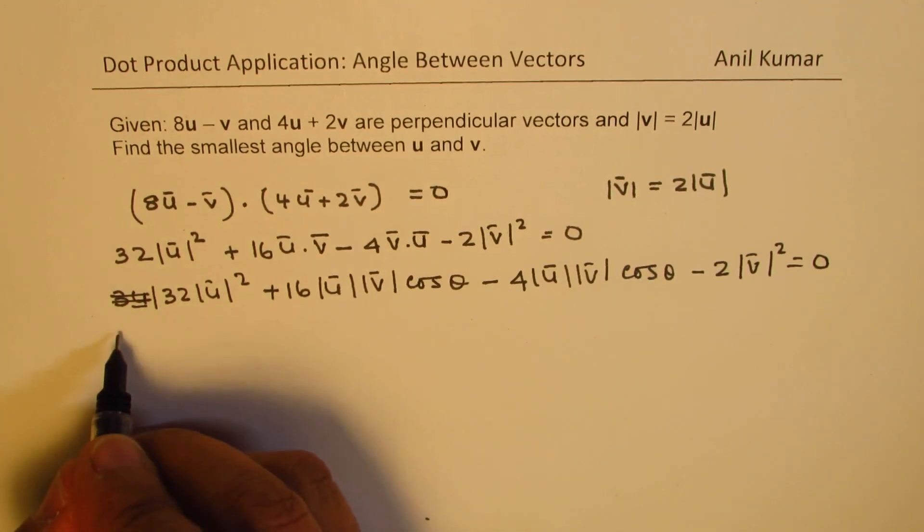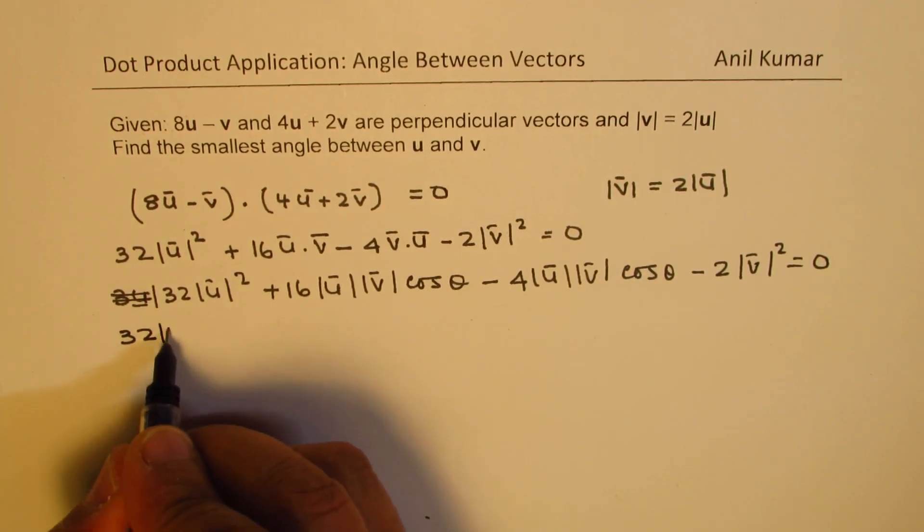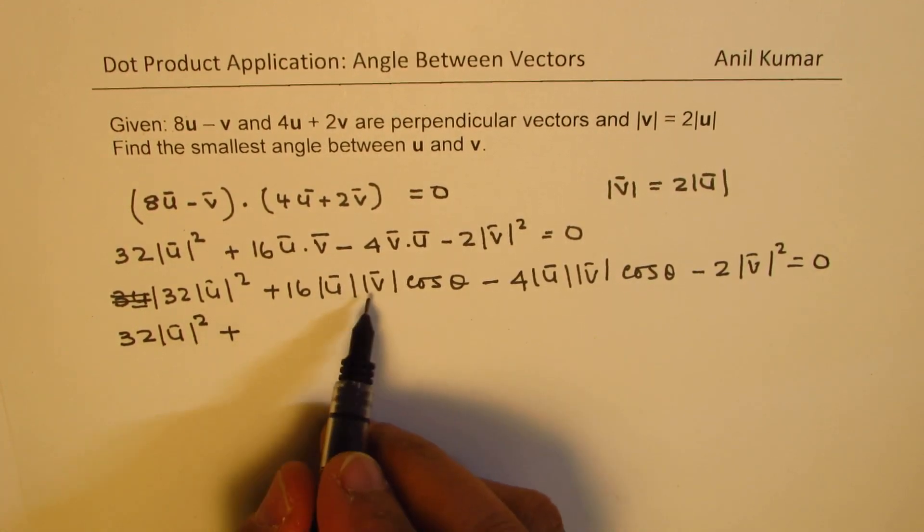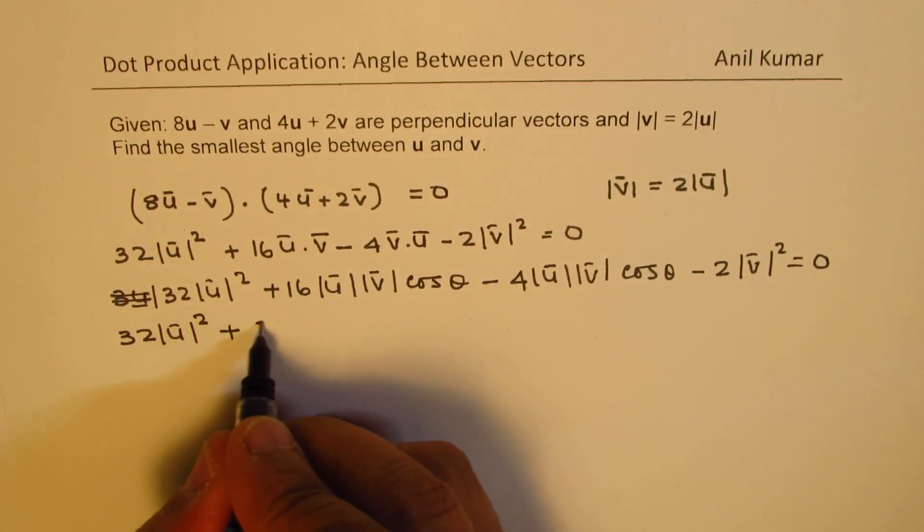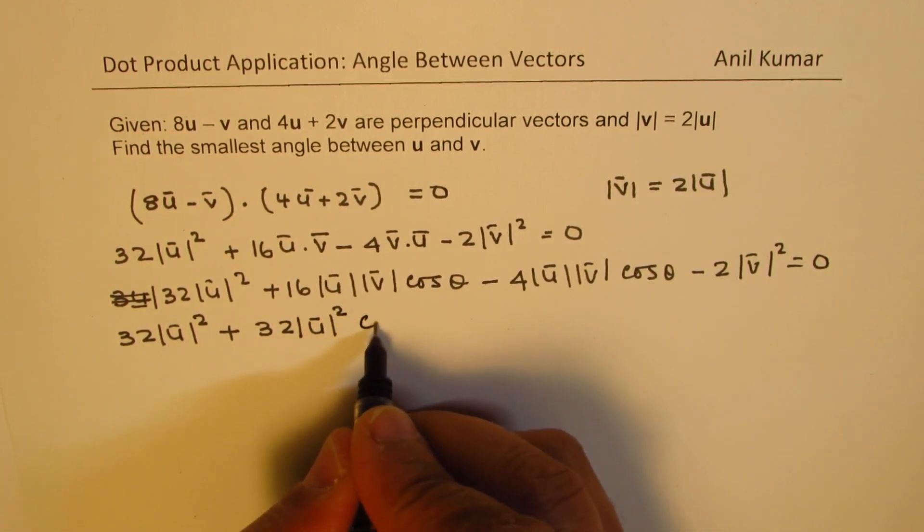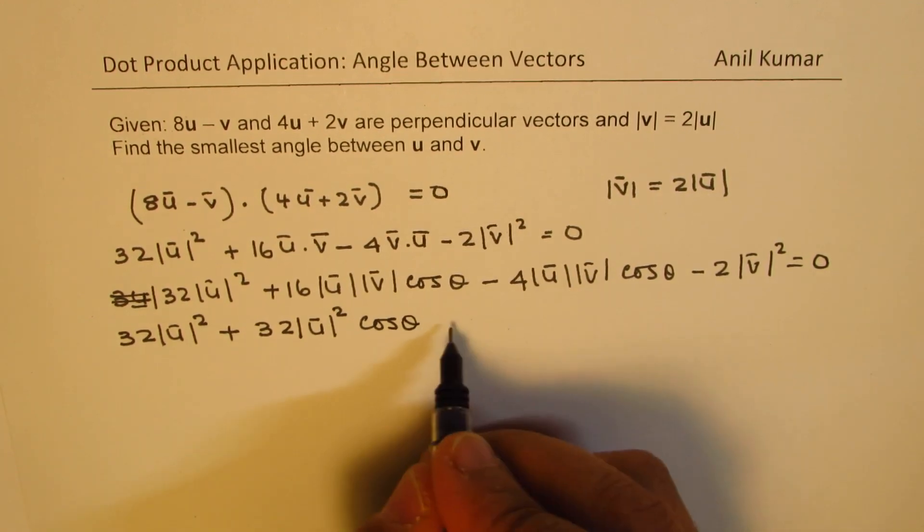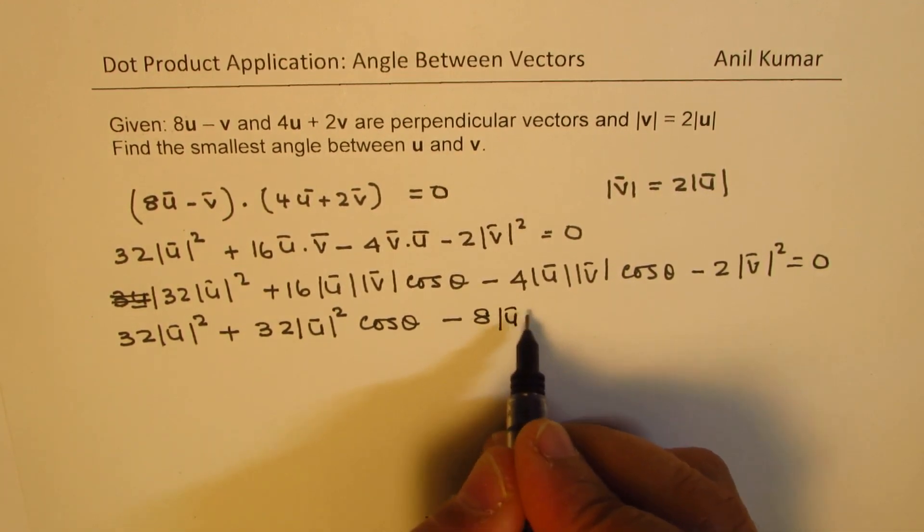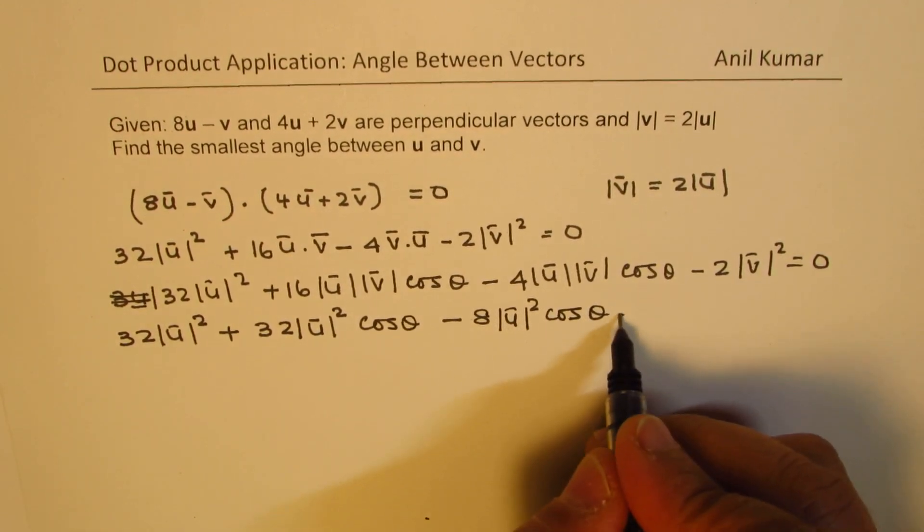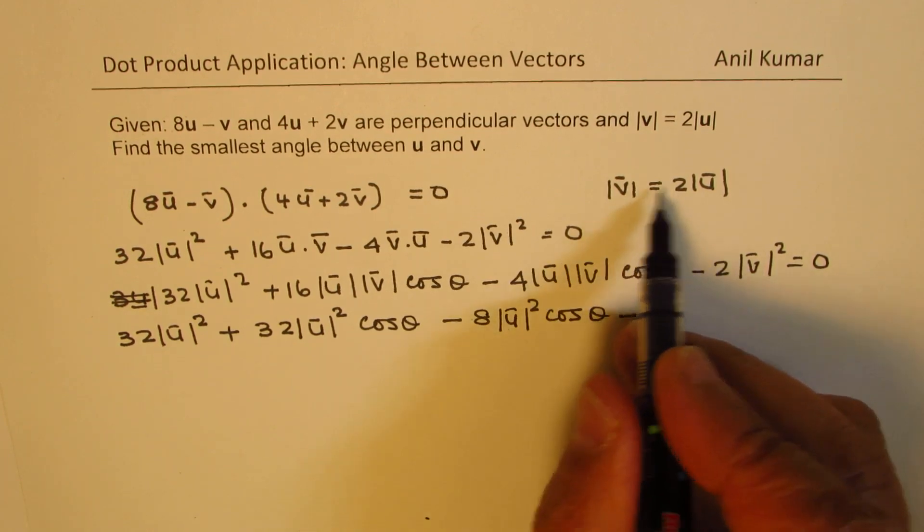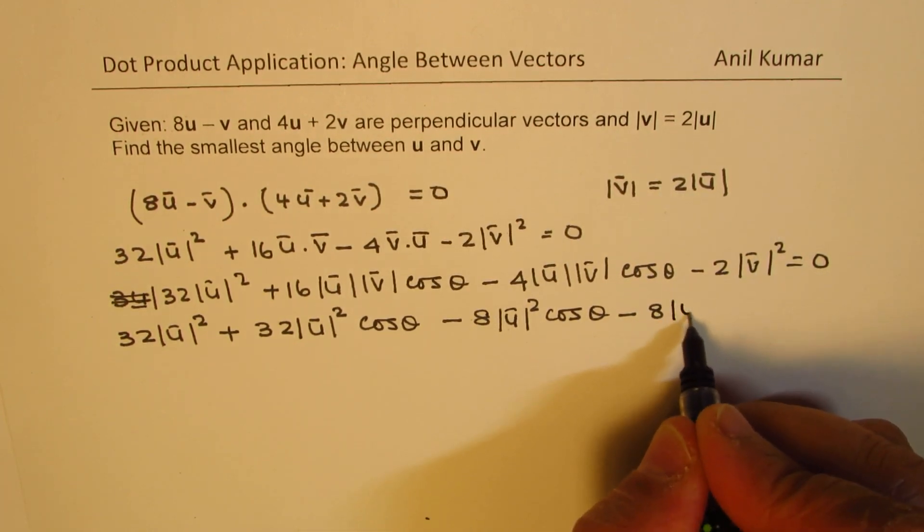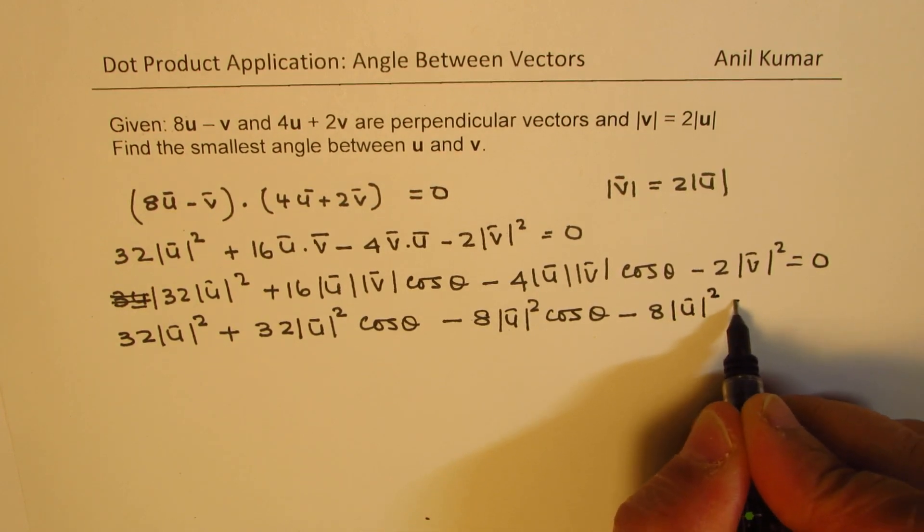Now substituting v as twice the magnitude of u, we get 32 magnitude of u squared plus, here we get twice 32, that means 32 magnitude of u squared cos theta. Here we get minus 8 magnitude of u squared cos theta. And here we get minus 8 magnitude of u squared, because v squared will be 4 times 2, equals zero.